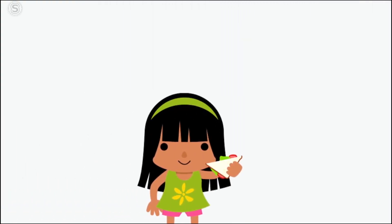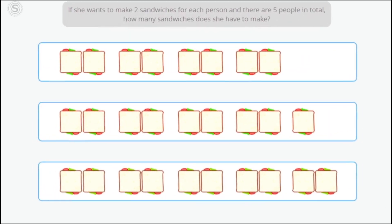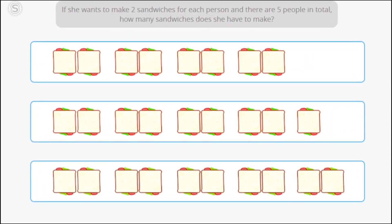Amy is in charge of preparing the sandwiches. If she wants to make two sandwiches for each person, and there are five people in total, how many sandwiches does she have to make?